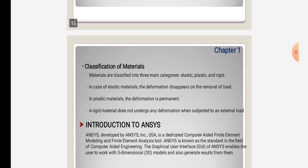Materials are classified into three main categories: elastic, plastic, and rigid. In elastic materials, the deformation disappears on removal of load. In plastic materials, the deformation is permanent. Rigid materials do not undergo any deformation when subjected to an external load.